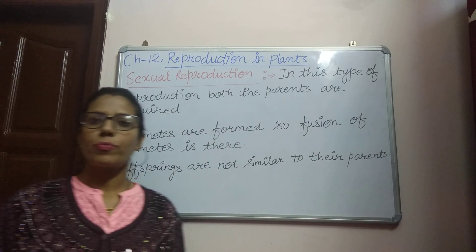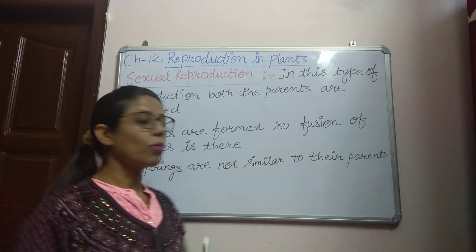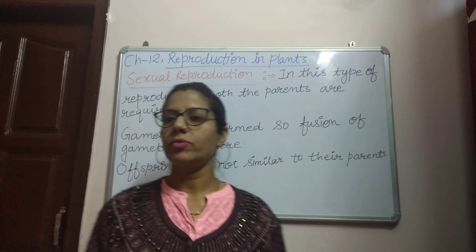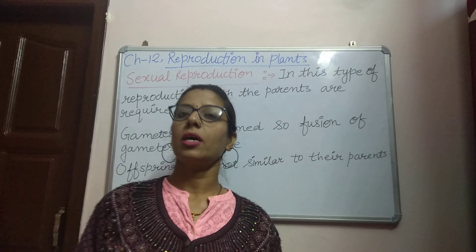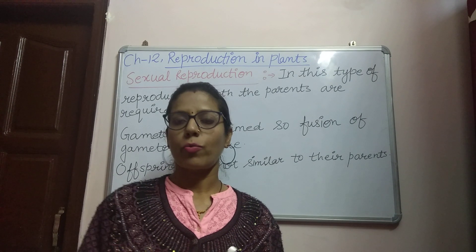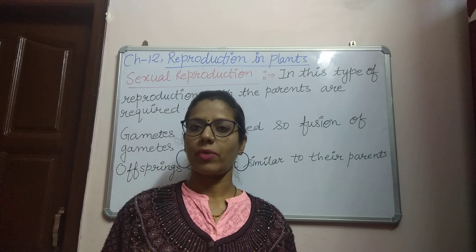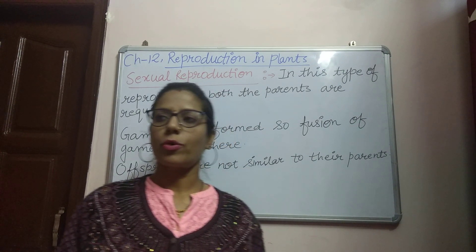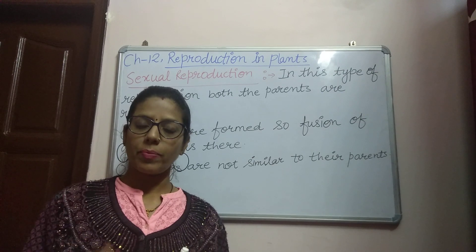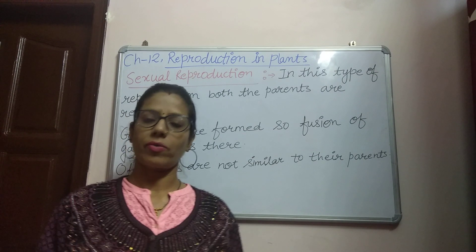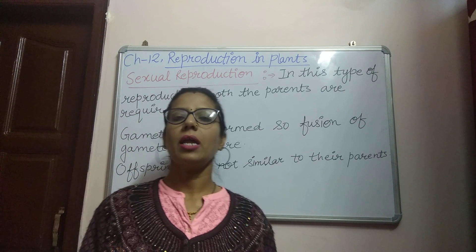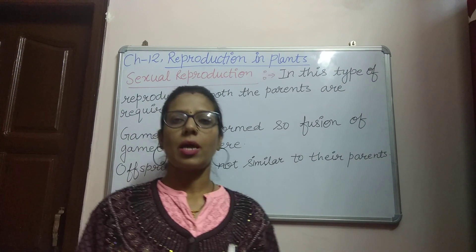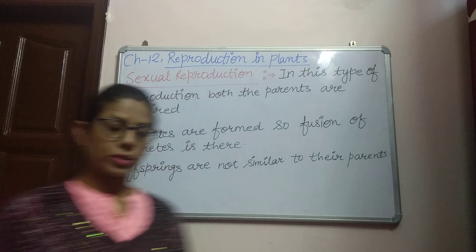In this type of reproduction, both the parents are required. As we have discussed in asexual reproduction, only one parent is required. But in sexual reproduction, both the parents are required — it means male and female, both parents are required.